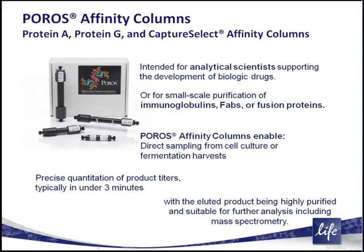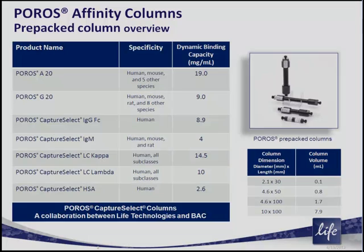In addition, the eluted product is highly purified and suitable for further analysis, including mass spectrometry. The Poros Prepacked Affinity column range now includes seven ligands immobilized on our Poros 20-micron beads and are offered in the four prepack column sizes shown in the table to the right.